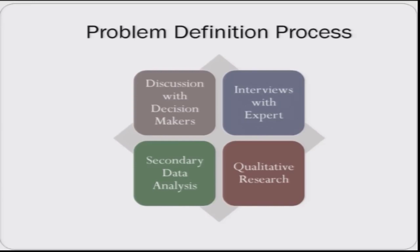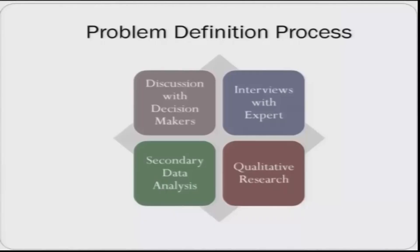The problem definition process includes steps like discussion with decision makers — you interact with them, understand the context of the problem, and how you have reached that problem situation. Understanding the historical perspective of that problem is very critical. You also understand their take on the problem, what could be the possible reasons for the decision-making situation, and what alternatives are available. You may also conduct interviews with experts to understand possible alternatives and the factors playing an important role in that decision-making situation.